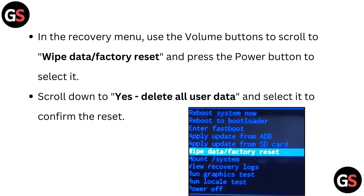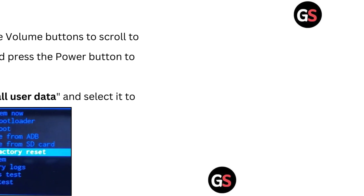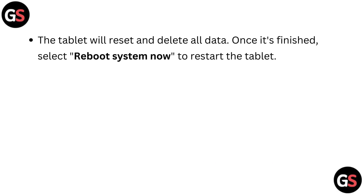In the recovery menu, use the volume buttons to scroll to 'Wipe Data / Factory Reset' and press the power button to select it. Now scroll down to 'Yes, delete all user data' and select it to confirm the reset. The tablet will reset and delete all data. Once it's finished, select 'Reboot System' to restart the tablet.